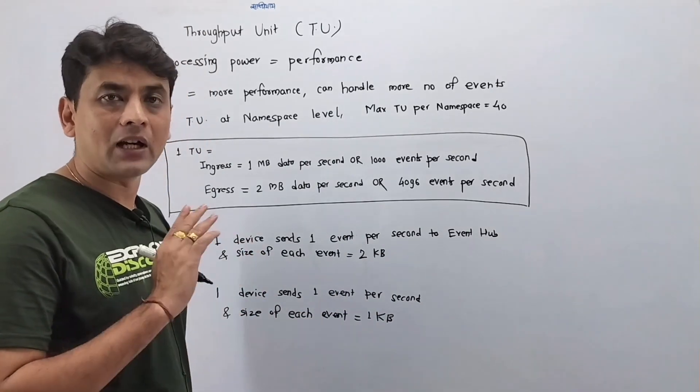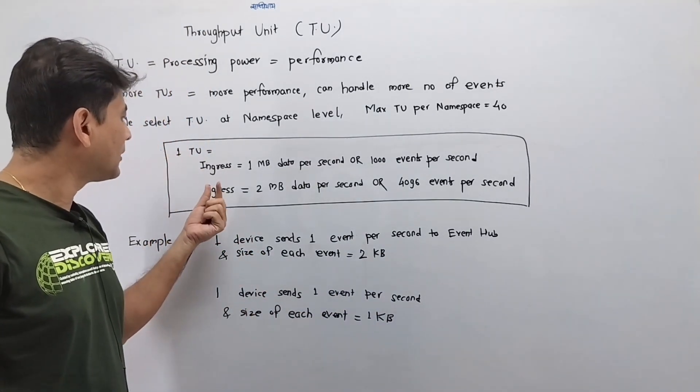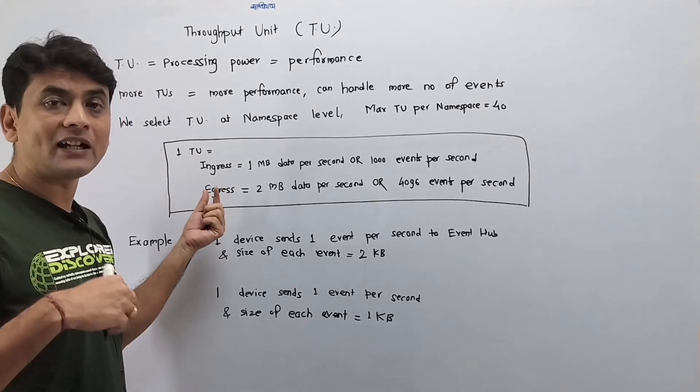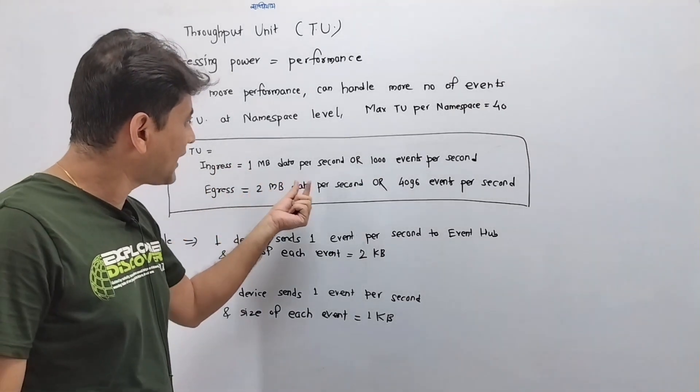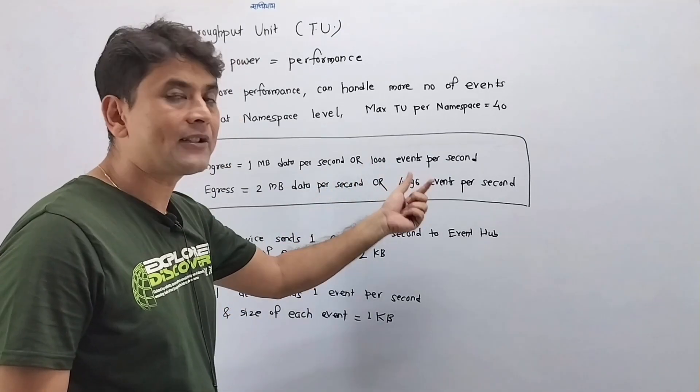And again, one TU for Event Hub can egress—that means it can output—2 MB of data per second or 4096 events per second.